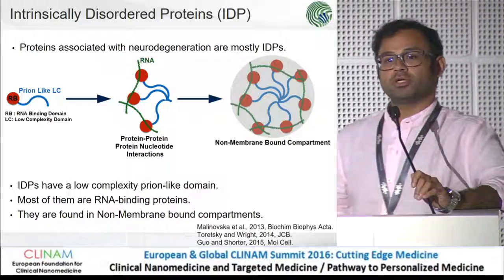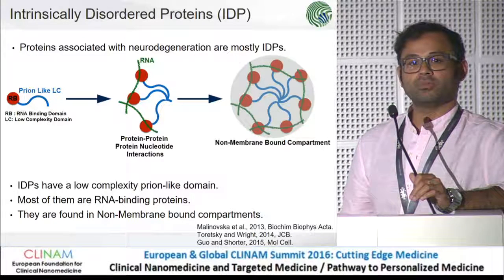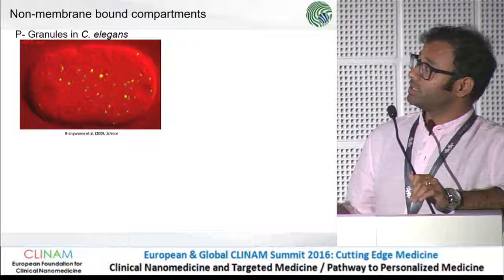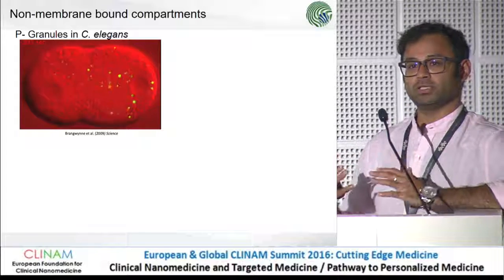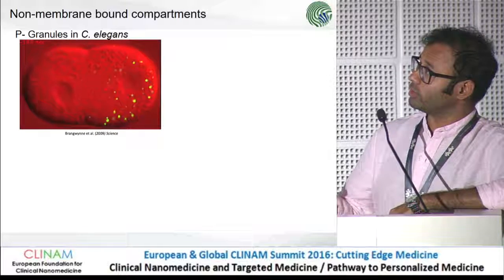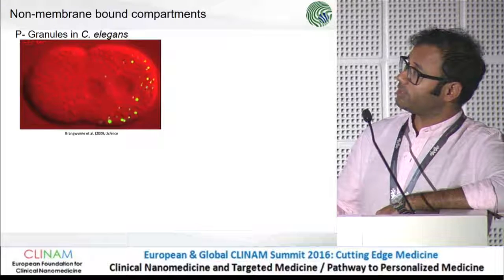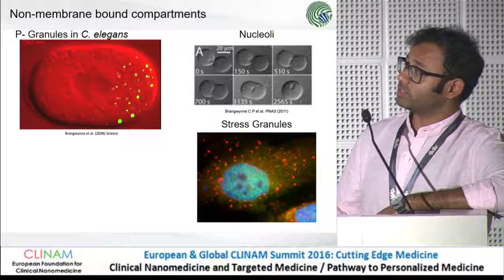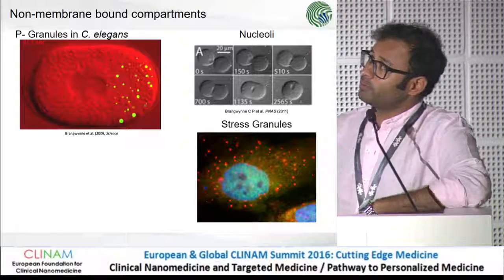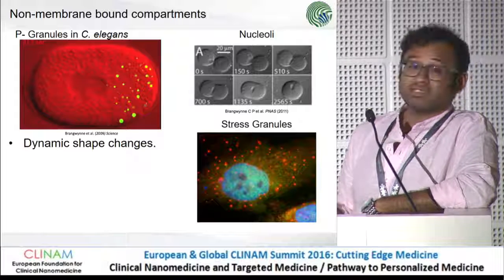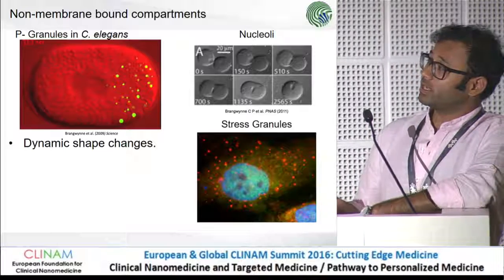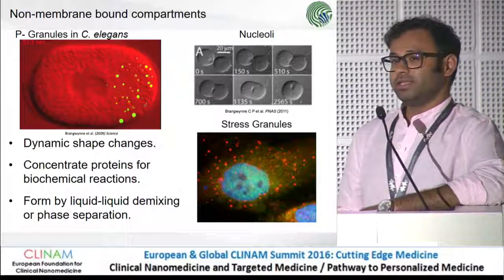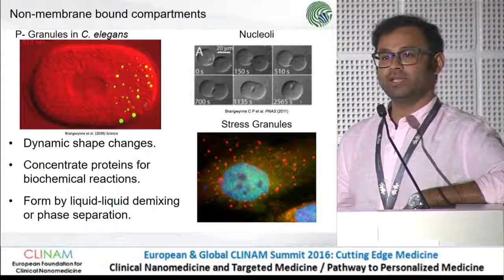So what is a non-membrane-bound compartment inside a cell? Most of us know about membrane-bound compartments like the Golgi apparatus or endoplasmic reticulum, but non-membrane compartments are different — they are compartments that a cell forms inside the cytoplasm but are not surrounded by any kind of membrane. Some examples are granules in the worm C. elegans that form and disappear, the nucleolus which is not surrounded by any membrane, and stress granules. These non-membrane-bound compartments are characterized by dynamic shape changes, the ability to concentrate proteins for biochemical reactions, and they form by a process called liquid-liquid demixing or phase separation.